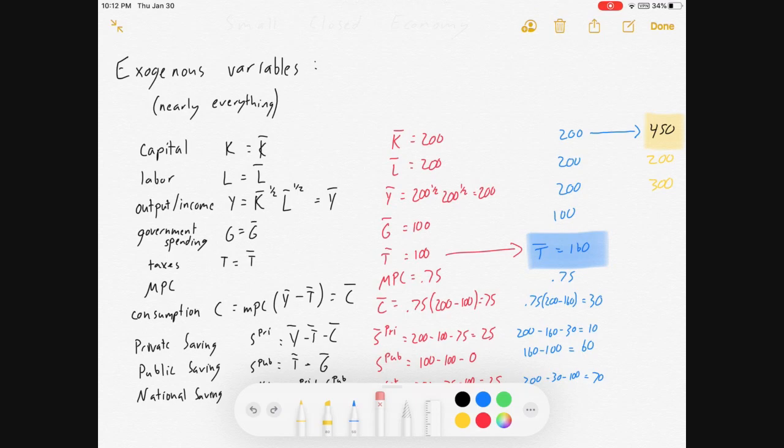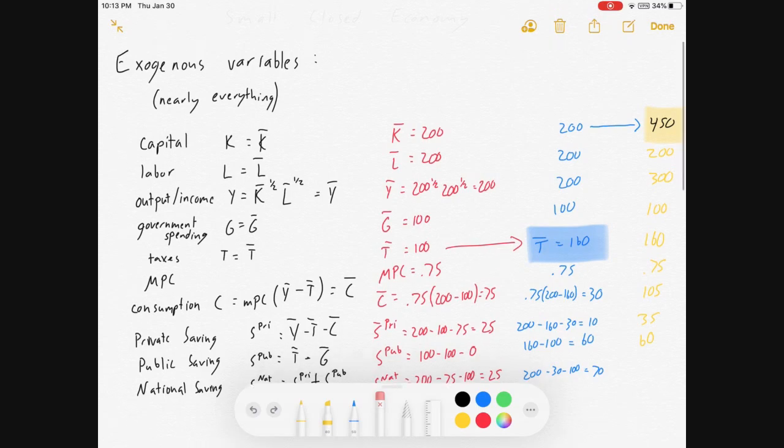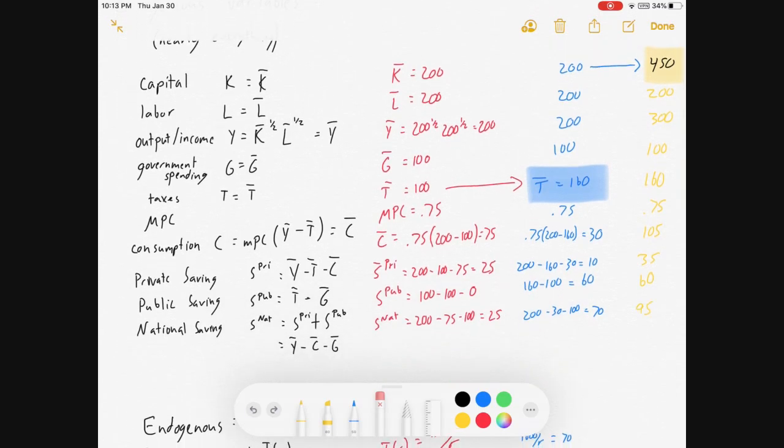So our income changes, so pretty much everything else that has income in it is going to have to change also. Government spending stays the same, taxes stay the same, MPC stays the same, but consumption has more income. So we put a 300 where the 200 is, and you get 105. Savings is going to change also. Private savings. Public savings won't change because the government hasn't changed its budget, but national savings will also change.